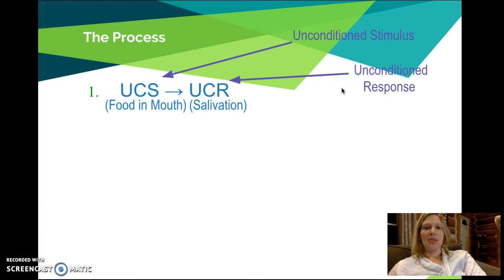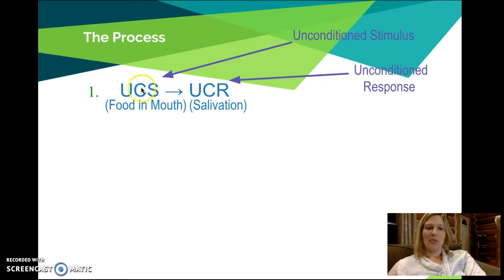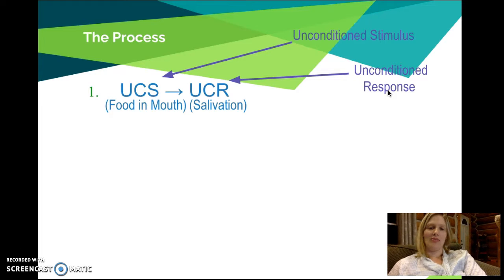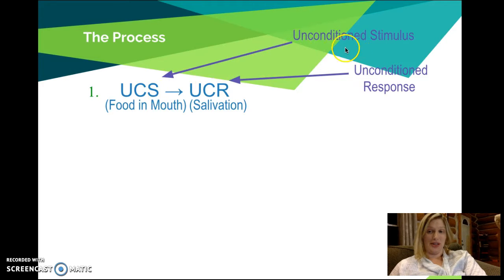If we think back to Pavlov's classic example, where he was teaching dogs to salivate at the sound of a bell, we always start out in classical conditioning with a relationship between two things that are unlearned. That's why we refer to them as an unconditioned stimulus and an unconditioned response. We're being joined by my buddy Ron Swanson, our new little kitty — he really likes classical conditioning. We always start with an unlearned relationship, called unconditioned because it's an automatic response to something.